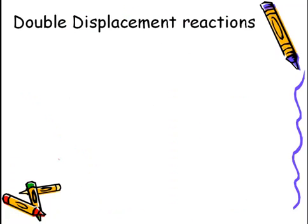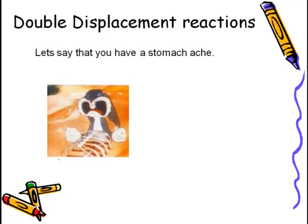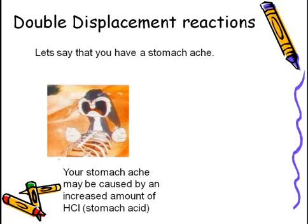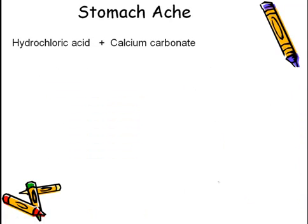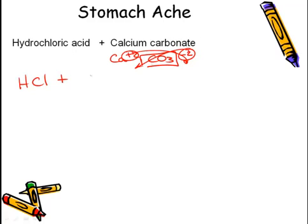If we look at a double displacement reaction, let's say that you have an upset stomach. And maybe the upset stomach is caused by the fact that you have a lot of stomach acid, which is HCl. A lot of times, if we have an upset stomach, one of the things we can do is to take Tums. The active ingredient in Tums is calcium carbonate. At this point, we have hydrochloric acid, HCl, plus calcium carbonate. Calcium is Ca, plus 2. Carbonate is CO3, negative 2. So we have CaCO3.